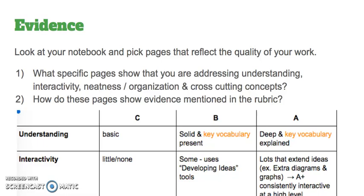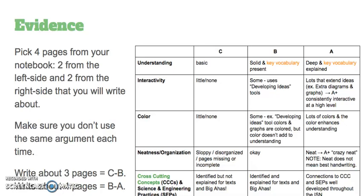When choosing pages, think about how they show evidence mentioned above — deep understanding, vocabulary, quality of writing, revisions. Look at the visual rubric to help select different aspects. You're going to pick four pages from your notebook: two from the left side and two from the right side. Make sure you don't use the same argument over and over — look for evidence showing understanding, interactivity, color, neatness, and cross-cutting concepts.